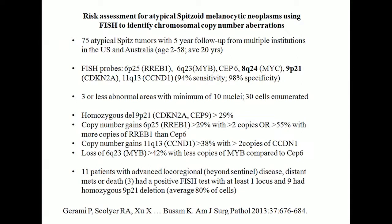A paper came out in 2013 from a group including Klaus Busen from Memorial, where they gathered 75 atypical spitzoid tumors with at least five-year follow-up from multiple institutions across the U.S. and Australia — a multi-institutional collaborative program. Patients ranged in age from 2 to 58 with an average of 20 years. They used the same four FISH probes from the prior study, but added two more that provided increased information, again not prejudicial in picking the probes but finding the most discriminatory combination.